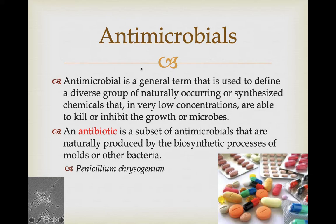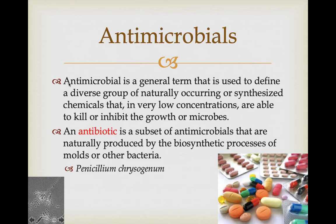Antimicrobials are chemicals that, even in low concentrations, are able to kill or slow down the growth of bacteria or other microbes — things like bleach, Lysol, triclosan, penicillin. They don't necessarily have to be produced by a living organism. An antibiotic, by contrast, is an antimicrobial that is naturally produced by another living organism — usually a mold or a bacterium. Things like Lysol can be produced by humans in a lab; no organism naturally produces triclosan. But living organisms naturally produce penicillin. That's the key difference.